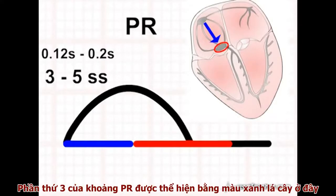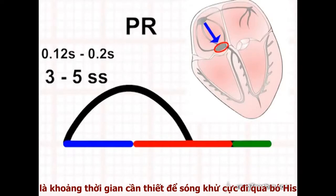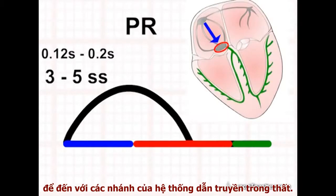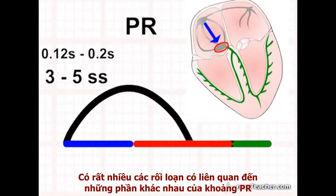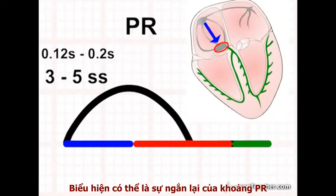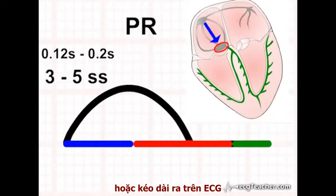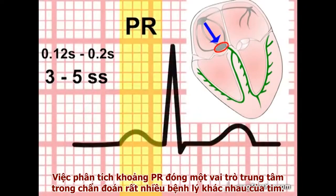The third contributor to the interval, shown here in green, is the time taken by the depolarisation wave to transit through the bundle of HIS and the branches of the intraventricular conducting system. Many important disorders are associated with alterations in different components of the PR interval, manifesting as abnormal shortening or prolongation on the ECG. Analysis of the PR interval plays a central role in diagnosing many different disorders of the heart.